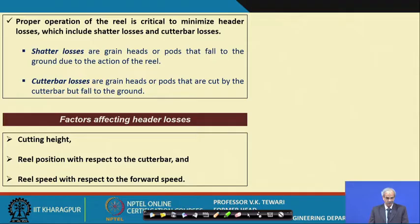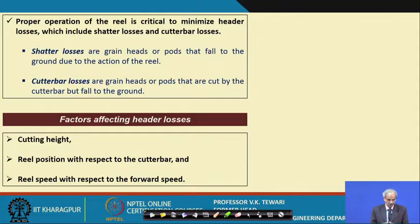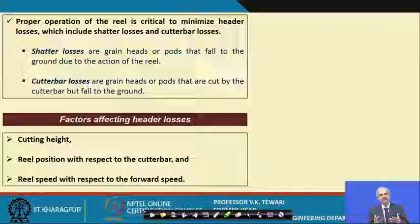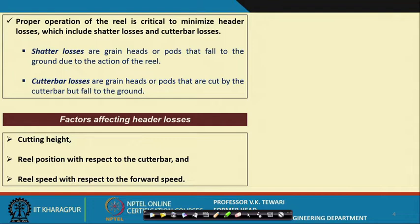If the reel does not operate properly, shattering losses occur. Cutter bar losses also happen when grain falls onto the cutter bar itself and cannot be picked up because it has already been conveyed for threshing — those grains are left behind in the field.